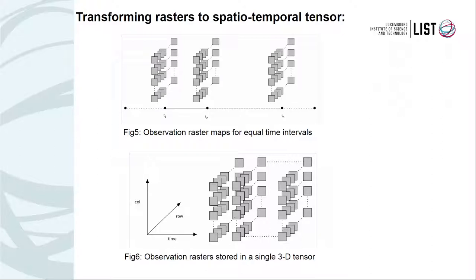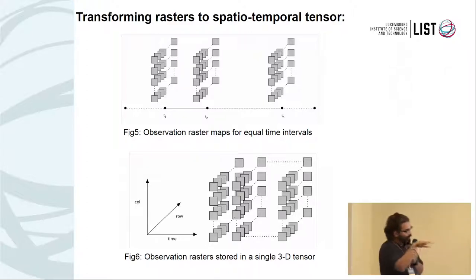This is the basic philosophy behind the entire approach. You have temporal information on the x-axis — these are basically the observations. Consider an azimuth angle: the azimuth changes according to the sun position. At T1, T2, T3, you have different azimuths for the same location. You can create a 3D tensor with x, y, and z axes, where the temporal information is on one axis, and club all these matrices together to build a single data structure.